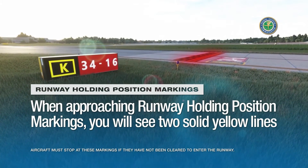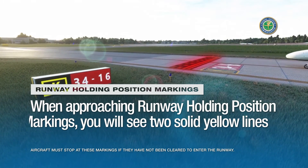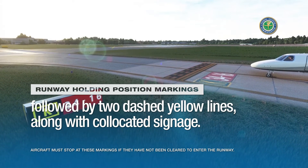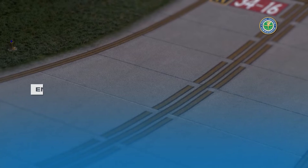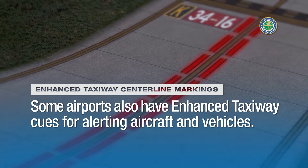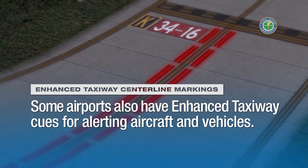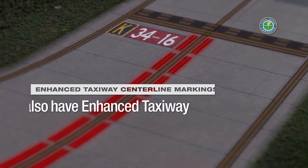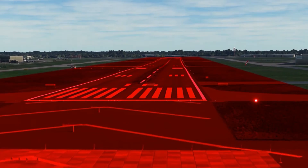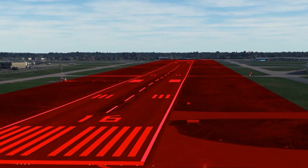When approaching runway holding position markings, you will see two solid yellow lines followed by two dashed yellow lines along with co-located signage. At some airports, you may also encounter enhanced taxiway centerline markings that provide additional visual cues to alert aircraft and vehicles of an upcoming runway holding position marking. You must contact Air Traffic Control for proper authorization before entering the protected area.